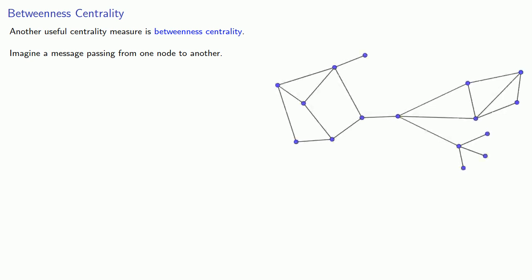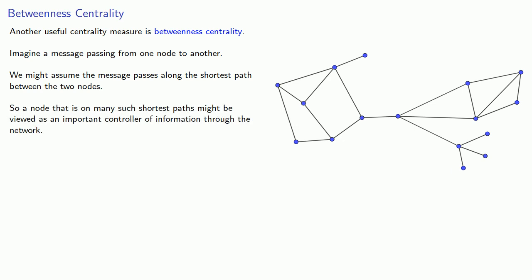And this leads to another useful centrality measure: betweenness centrality. So imagine a message passing from one node to another. We might assume the message passes along the shortest path between the nodes. So a node that is on many such shortest paths might be viewed as an important controller of the information through the network.